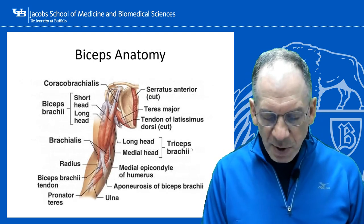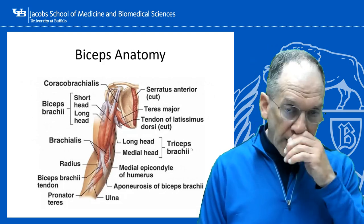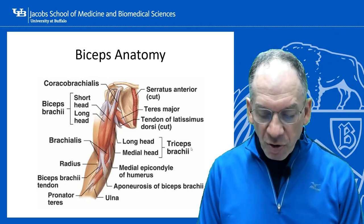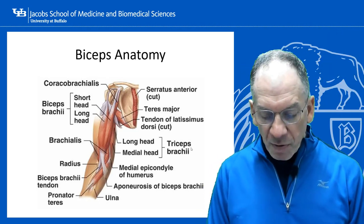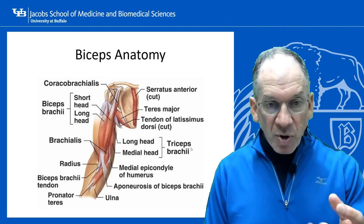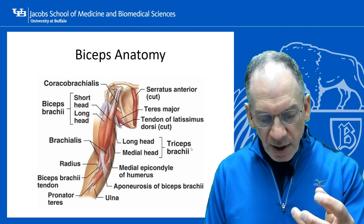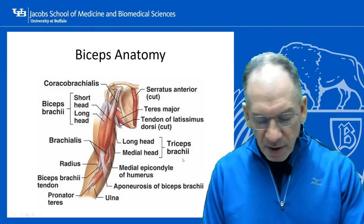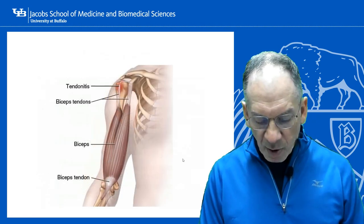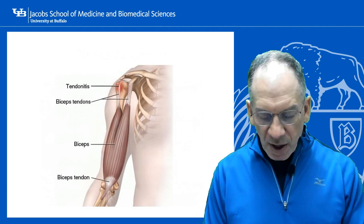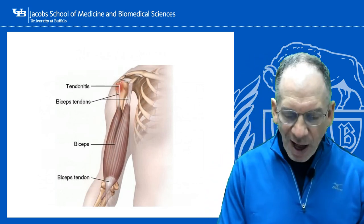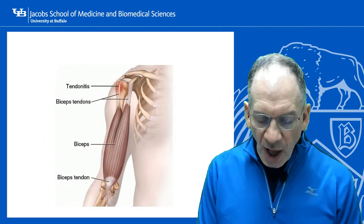Biceps tears — biceps anatomy. The biceps has a long head and a short head. The long head originates above the glenoid, travels through the shoulder joint down the bicipital groove, and inserts on the radius. The short head comes off the tip of the coracoid process along with the coracobrachialis, then also inserts on the radius.